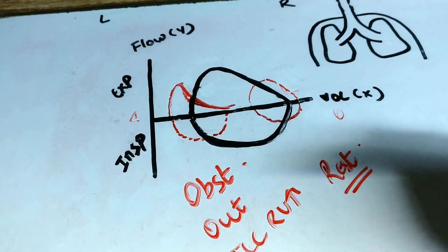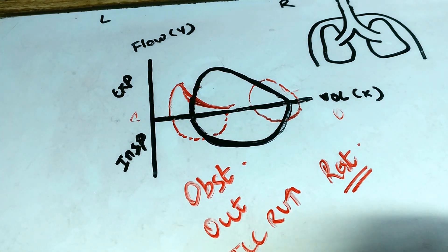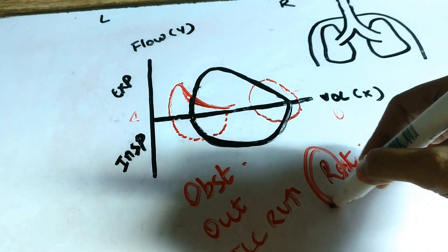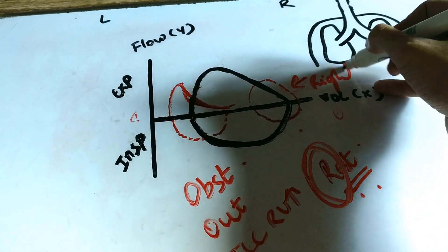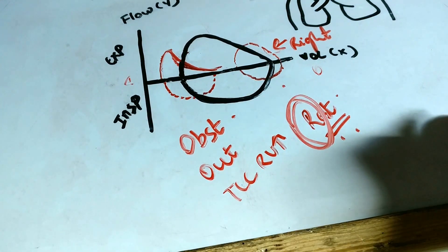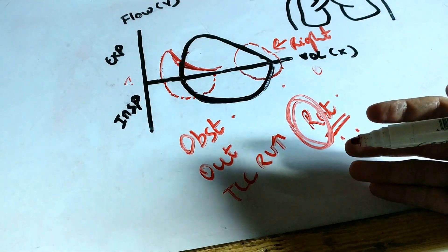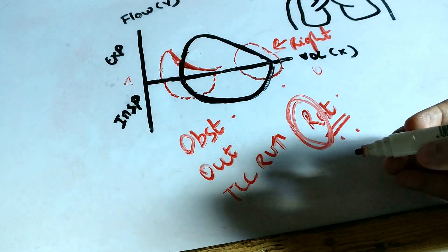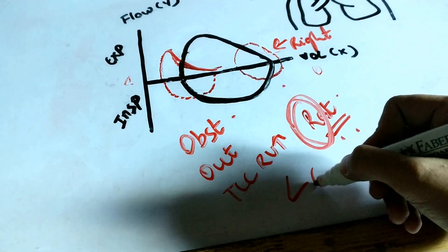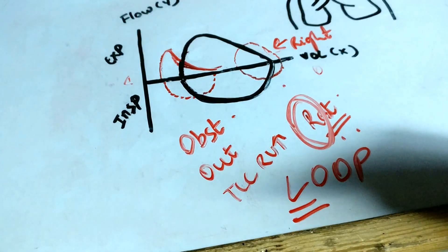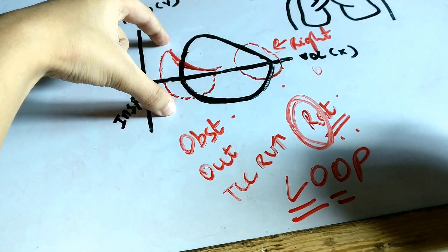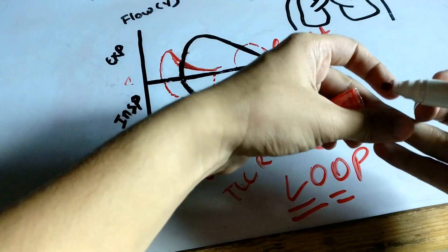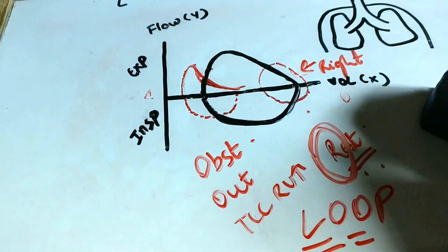My mnemonic is that restrictive has an R, and in restrictive lung disease the flow volume loop shifts towards the right. For obstructive lung diseases, you can use the mnemonic 'loop' — L for left and O for obstructive. So in obstructive lung diseases the flow volume loop shifts towards the left, and in restrictive diseases it shifts towards the right.